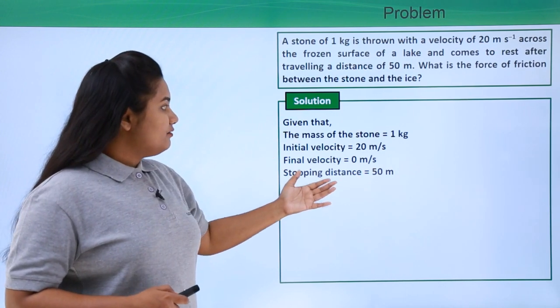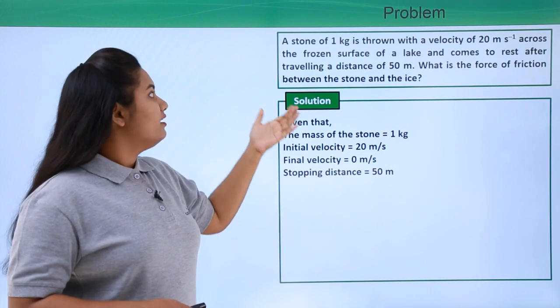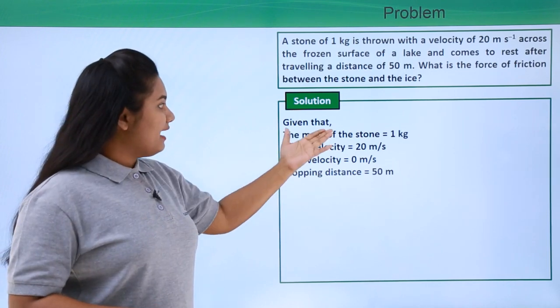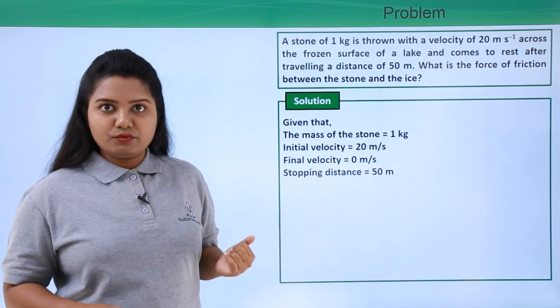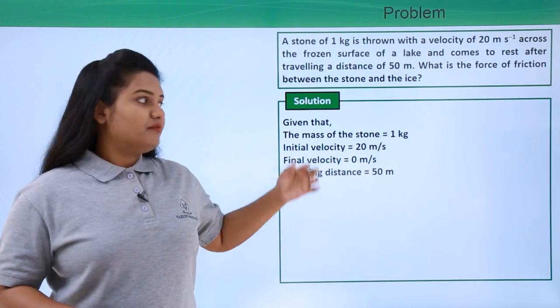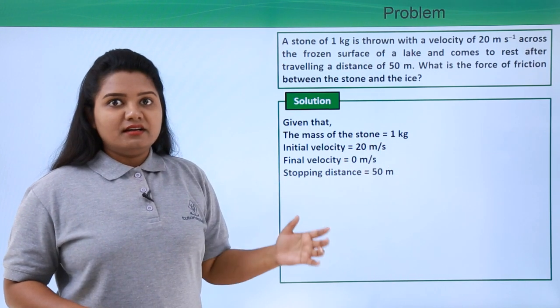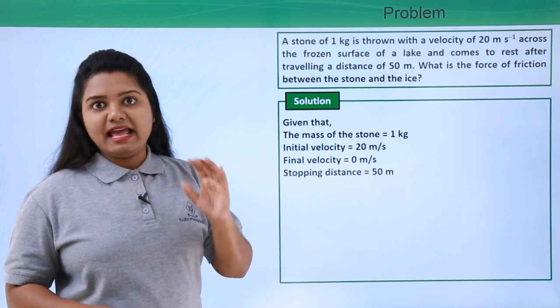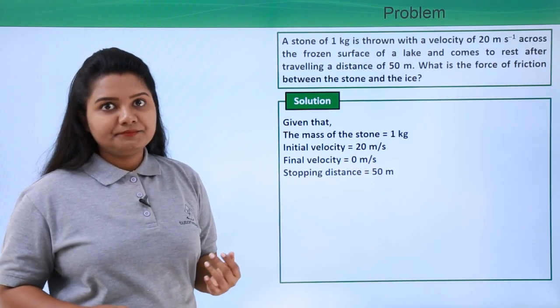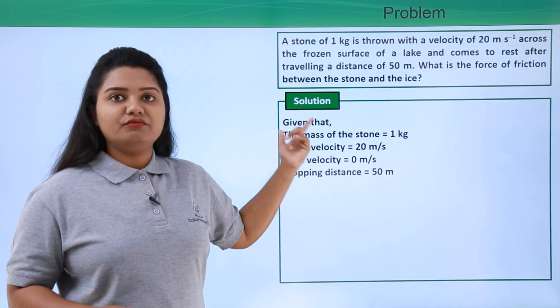Now with this information, we need to find out what is the force of friction which is responsible for the stone to stop. So we need to find the acceleration of the stone. Since the formula for the force is mass into acceleration, we already have the value of the mass. We need to find the acceleration in order to find out the force of friction.